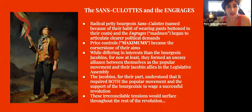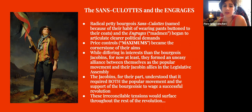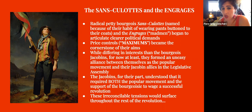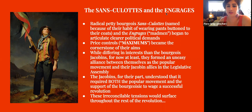The sans-culottes and the Enragés — both radical petty bourgeois — began to articulate clear political demands. Their biggest demand was price controls, or maximums, concerned with the price of bread and other commodities. Although they had really different interests than the bourgeois Jacobins, for now they formed an uneasy alliance. The Jacobins understood that you needed both the popular movement and the bourgeois class involved for a successful revolution, but these irreconcilable tensions would surface throughout the rest of the revolution.